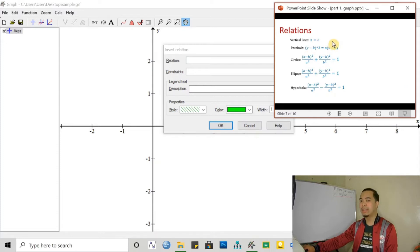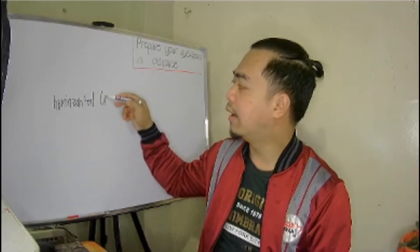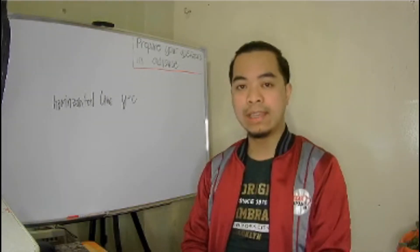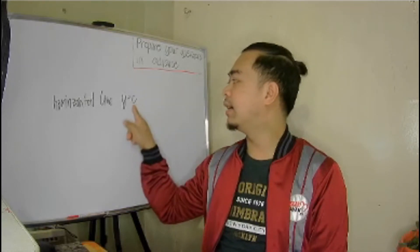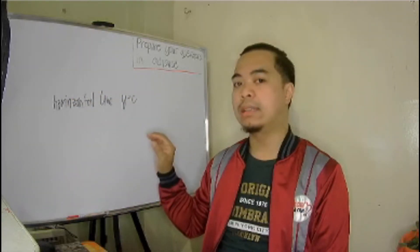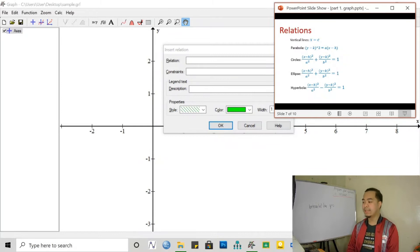Let's start with a vertical line. A vertical line is not a function — it fails the vertical line test. A horizontal line is a function, so if you are graphing a horizontal line, then you can make use of the add function button. If you want to input a horizontal line, just identify the point on the y-axis where you want your horizontal line to cross — that is given by the constant c. But for vertical lines, it's of the form x equal to c.